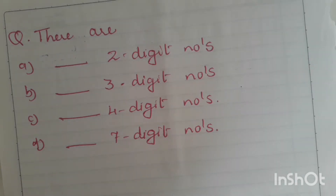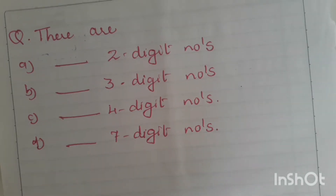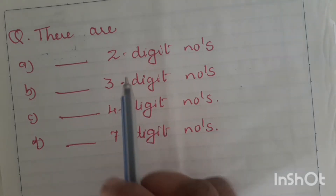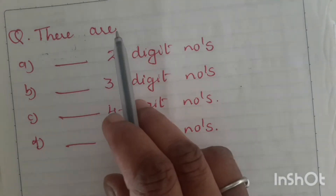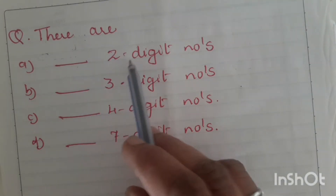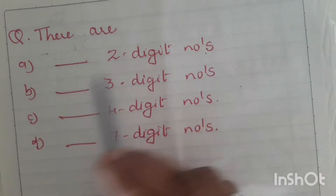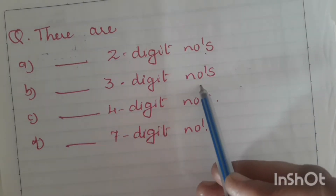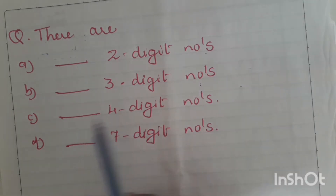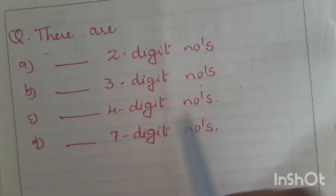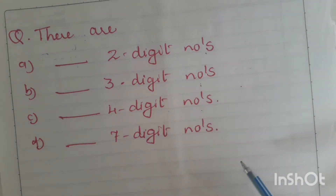Hello children, please check your understanding on knowing our numbers. Here the question is: there are blank 2-digit numbers, blank 3-digit numbers, blank 4-digit numbers, blank 7-digit numbers.